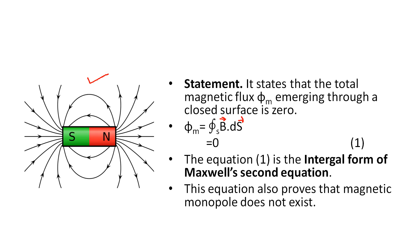This is the exact diagram I was trying to explain. This equation one is the integral form of Maxwell's second equation. It is also known as Gauss's law in magnetism.